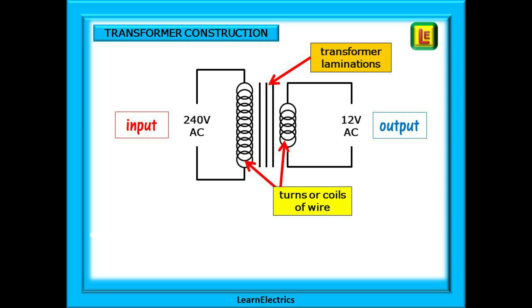These turns, or coils of wire on each side, are electromagnetically linked by the transformer laminations.